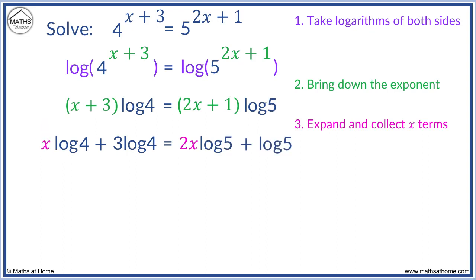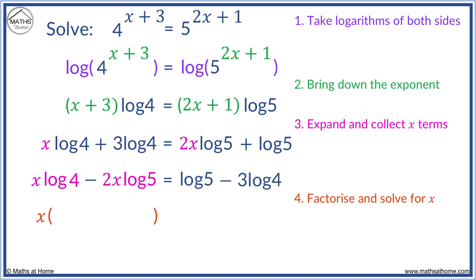We keep x log 4 on the left and subtract 2x log 5 to get it on the right. We factorise and solve. Taking out the x we have log 4 minus 2 log 5 in the brackets.